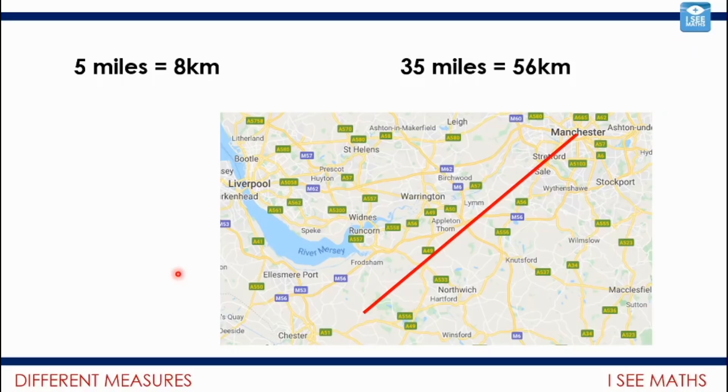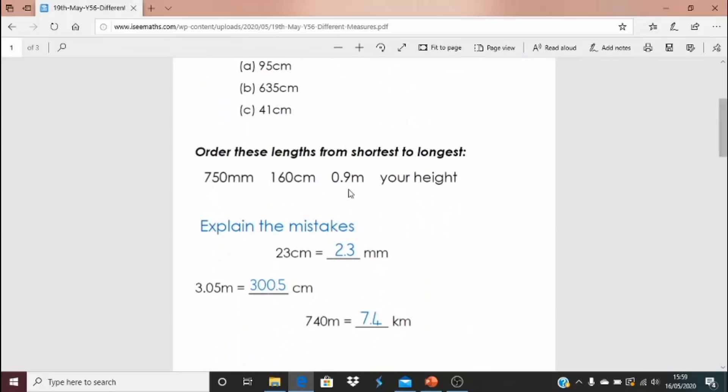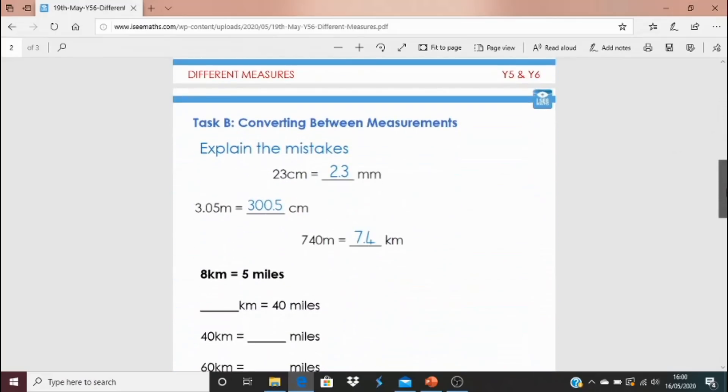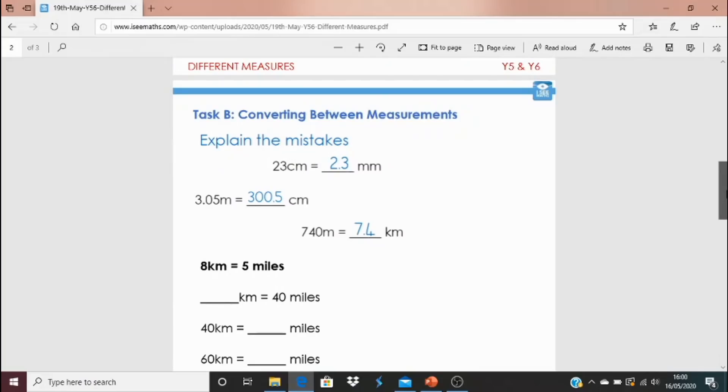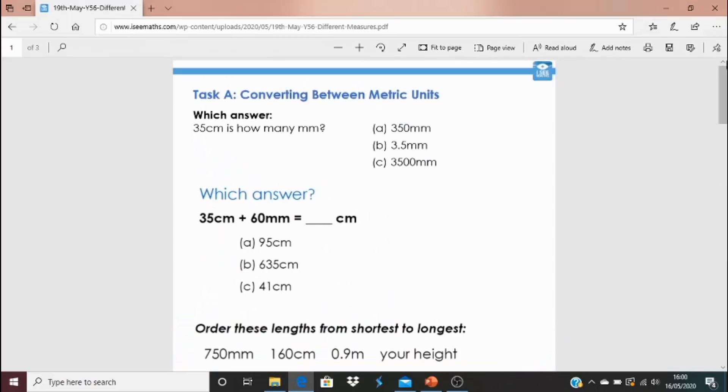Today's task—click on the blue link underneath this video. Task A is all about converting between metric units. If you think that'll be a great challenge, then do Task A. We've got which answer is correct, can you explain the mistakes for the others, order these lengths from shortest to longest. Task B is different—it's converting between different kinds of measurements, so not just metric units. We've got the same explain-the-mistakes questions to start with, then conversion between kilometers and miles and also between different times. Answers are at the bottom. I'll be back again tomorrow.